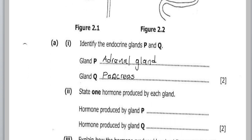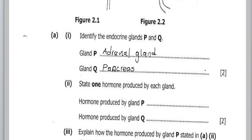Part two asks us to state one hormone produced by each gland. The hormone produced by gland P, the adrenal gland, is adrenalin. The hormone produced by gland Q, the pancreas, is insulin. Note that the pancreas also produces glucagon, so you can state either insulin or glucagon.